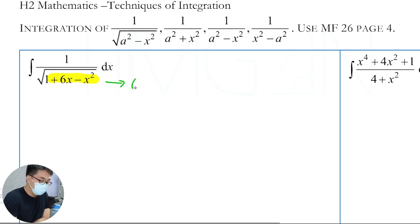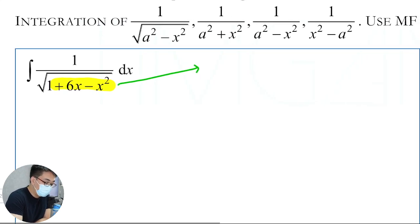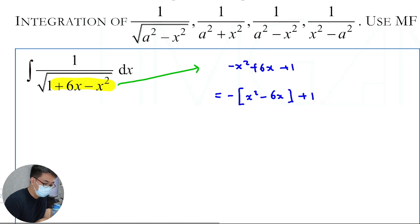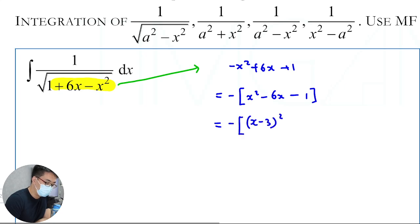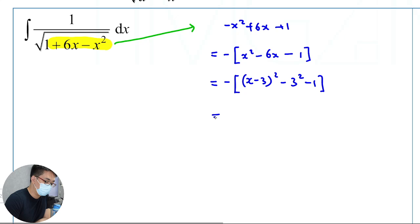Differentiating this gives 6 minus 2x. This is a constant — we know it's MF26. So MF26: complete the square here. We have minus x squared plus 6x plus 1, which becomes minus x squared minus 6x plus 1, and completing the square gives minus (x minus 3) squared minus 9, so this will be 10.